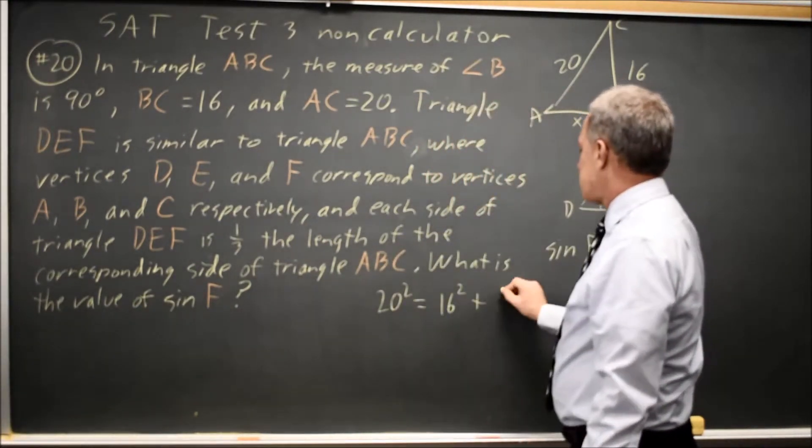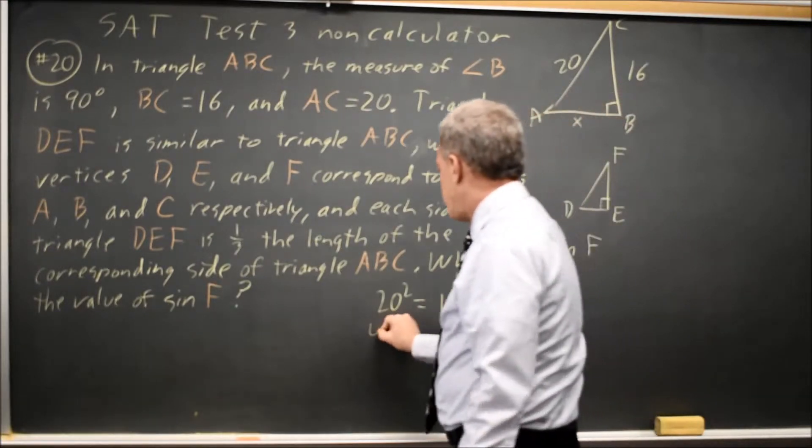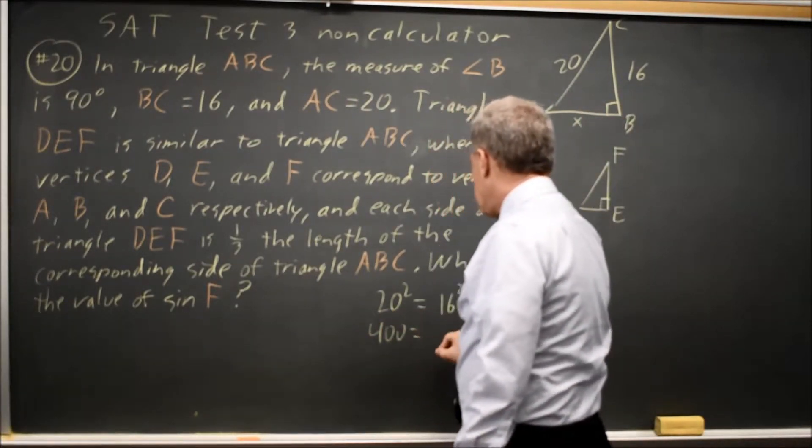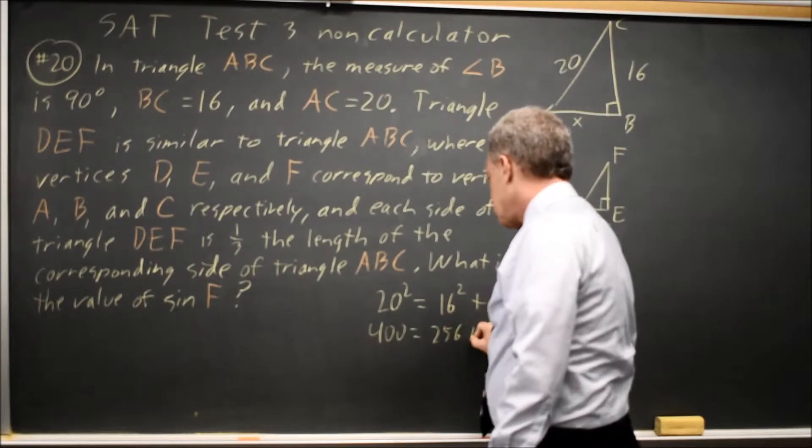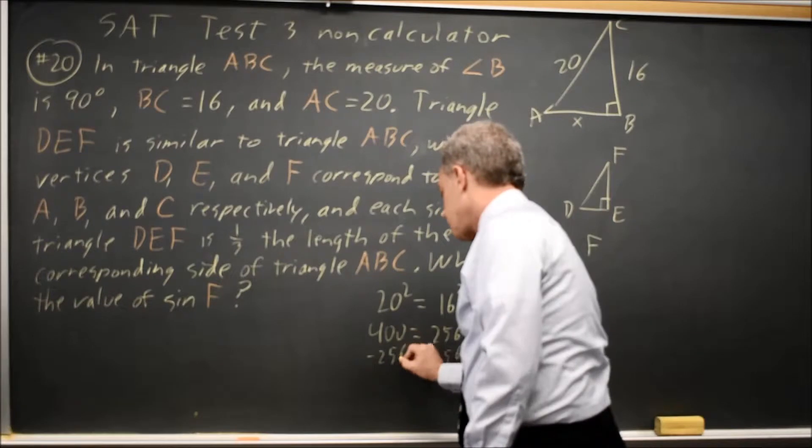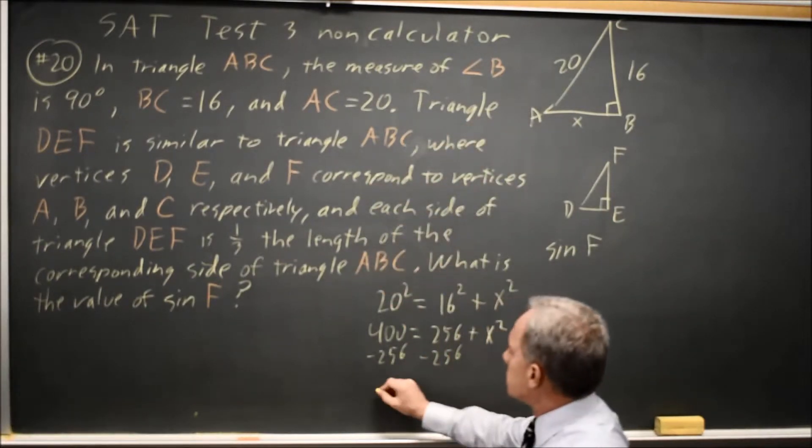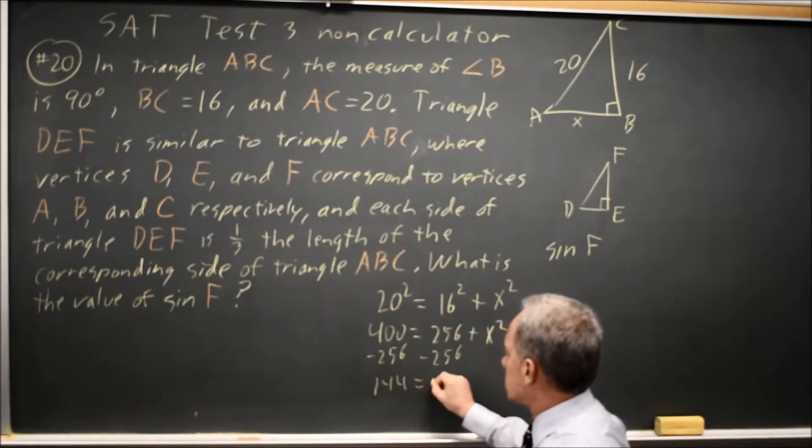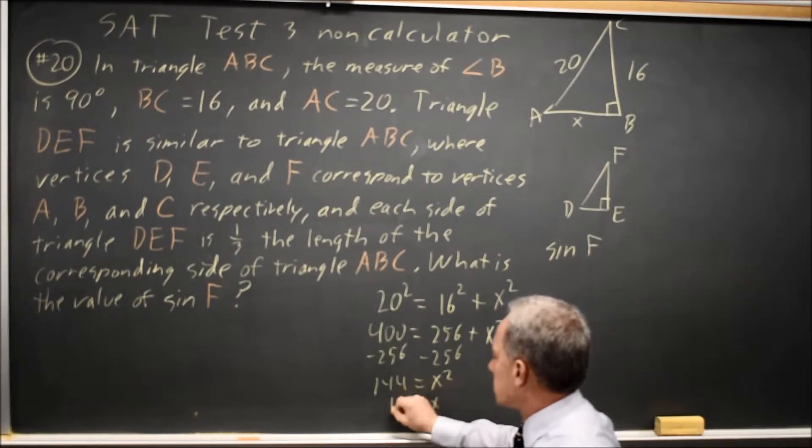So 400 equals 256 plus X squared, subtract 256, and X squared equals 144, so X equals 12.